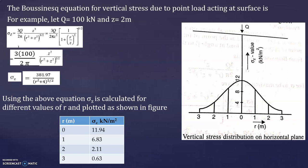The main step is to use Boussinesq's equation with the given z value, assume different r values (horizontal distances), find sigma z for each, and draw the vertical stress distribution on the horizontal plane. I hope all of you understood. Thank you.